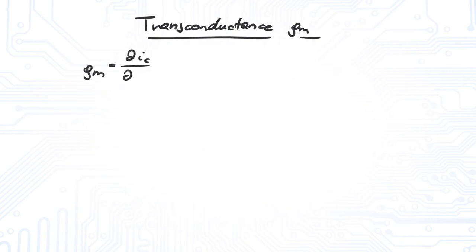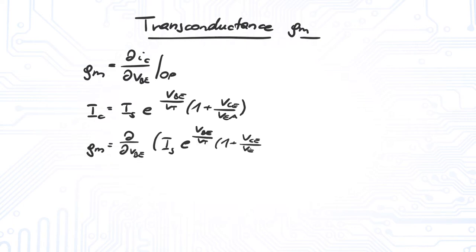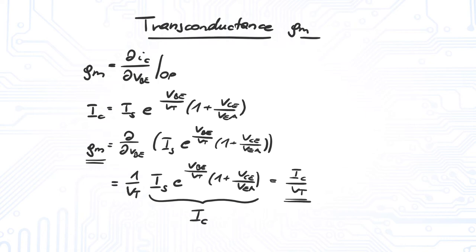The transconductance can be calculated easily. Let's assume we operate our bipolar transistor somewhere in the forward active region. We just substitute for the collector current and calculate the derivative with respect to VBE. The transconductance GM equals IC divided by VT.